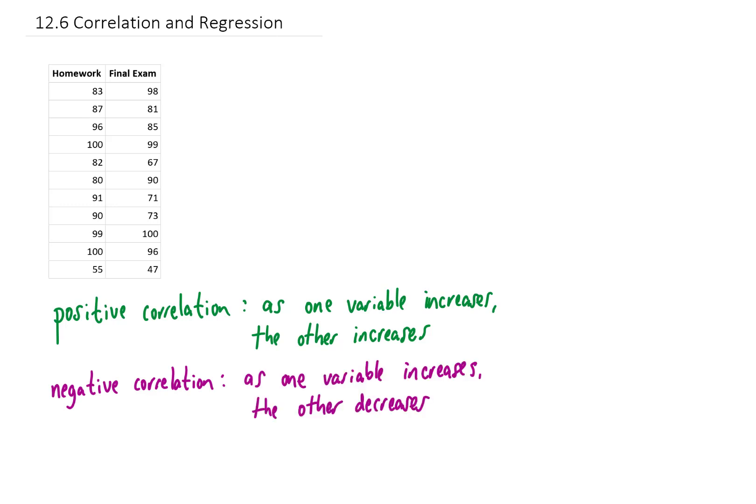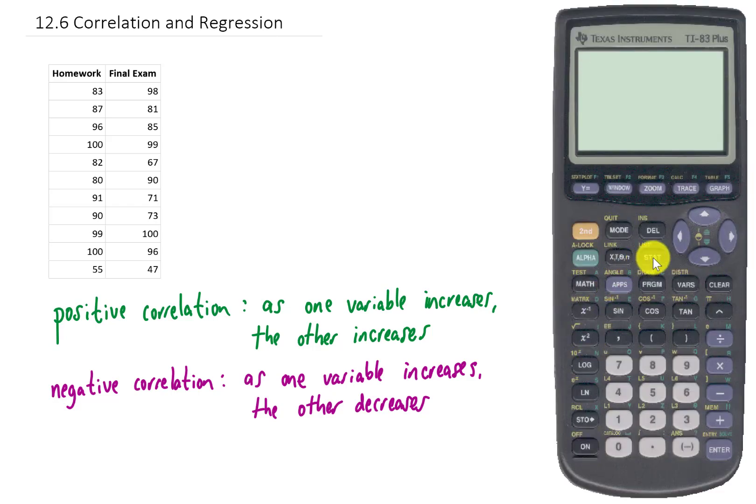Let's test this out first on a TI calculator. And then if we have time, we'll do this on Excel as well. So the first thing I want to do is enter all this data. I'm going to click Stat, and then we're going to go to Edit. So I'm just going to hit Enter.